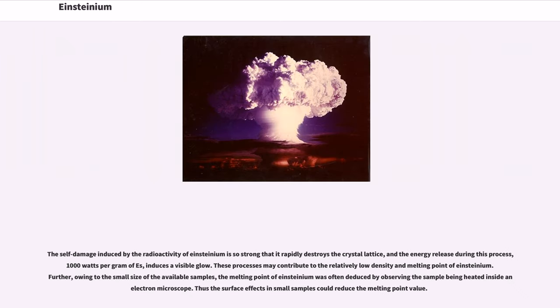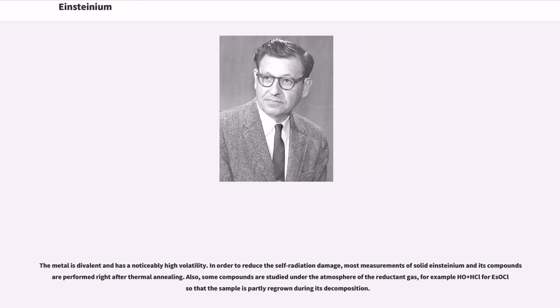The self-damage induced by the radioactivity of Einsteinium is so strong that it rapidly destroys the crystal lattice, and the energy released during this process, 1000 watts per gram of Es, induces a visible glow. These processes may contribute to the relatively low density and melting point of Einsteinium. Further, owing to the small size of the available samples, the melting point of Einsteinium was often deduced by observing the sample being heated inside an electron microscope. Thus the surface effects in small samples could reduce the melting point value. The metal is divalent and has a noticeably high volatility. In order to reduce the self-radiation damage, most measurements of solid Einsteinium and its compounds are performed right after thermal annealing. Also, some compounds are studied under the atmosphere of the reductant gas, for example H2 plus HCl, so that the sample is partly regrown during its decomposition.